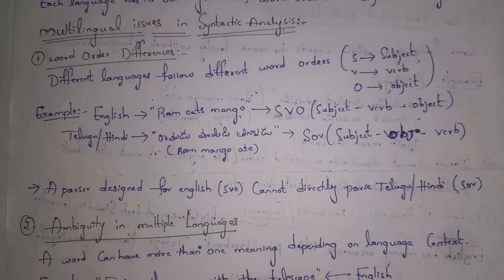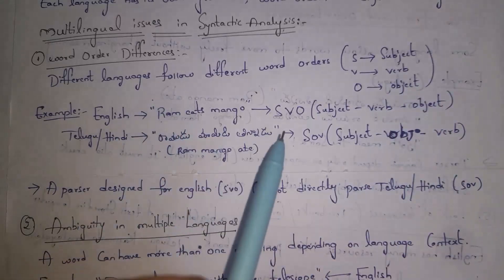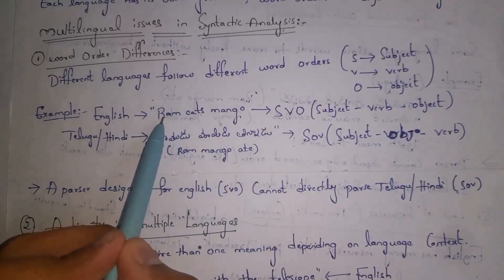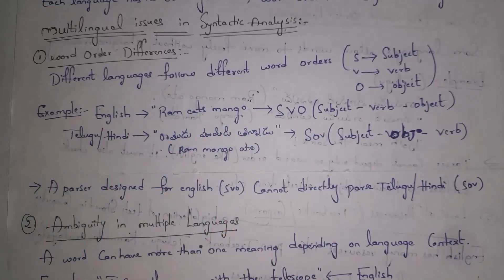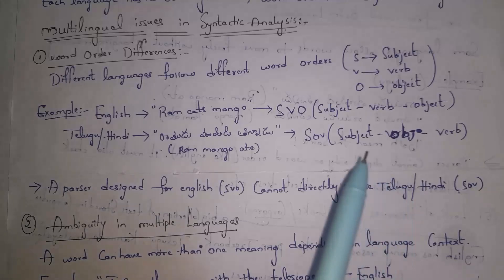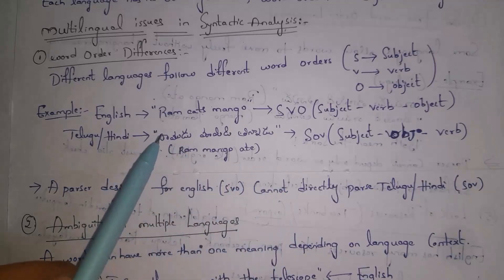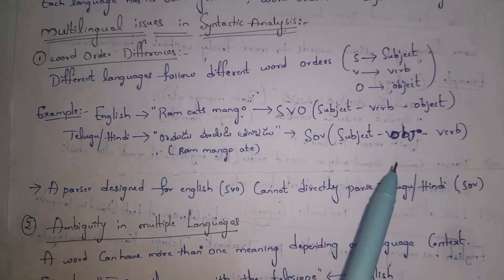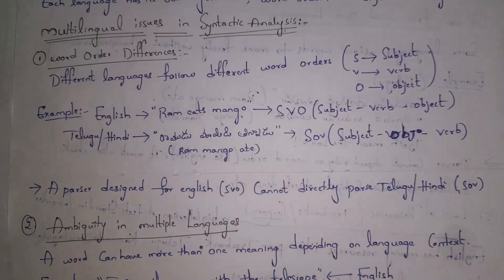The first issue is word order difference, because different languages follow different word orders. For example, English follows Subject-Verb-Object order — 'Ram eats mango', where Ram is subject, eats is verb, and mango is object. Whereas Telugu follows Subject-Object-Verb order — 'Ramudu mamidi tinadu', where Ramudu is subject, mamidi is object, and tinadu is verb. So parsers designed for English cannot understand Telugu or Hindi because each language follows a different word order.